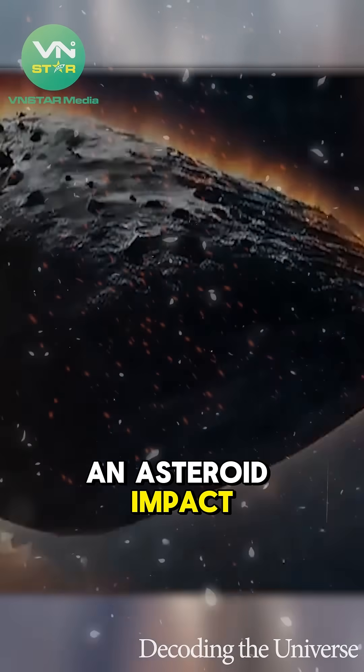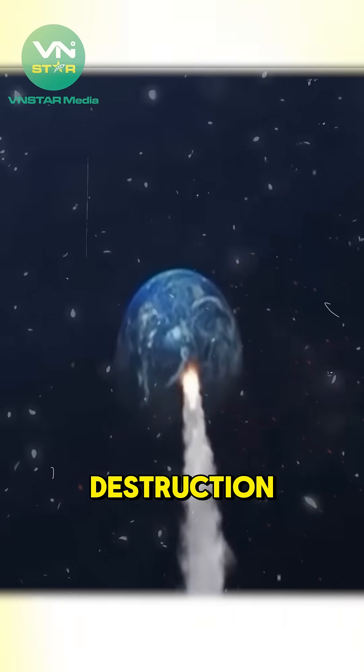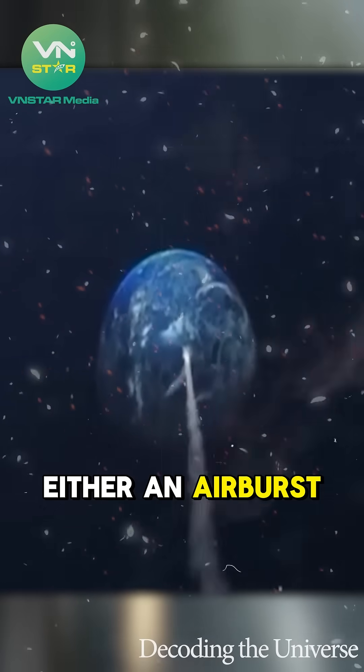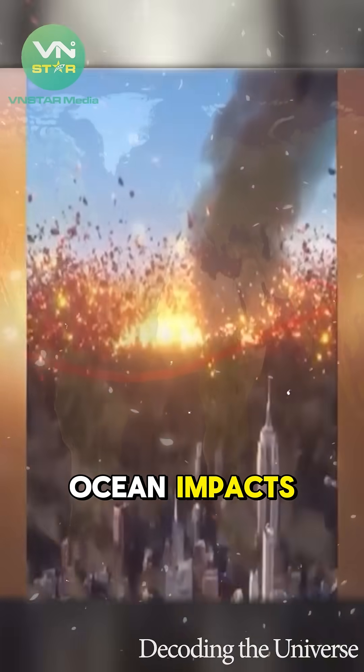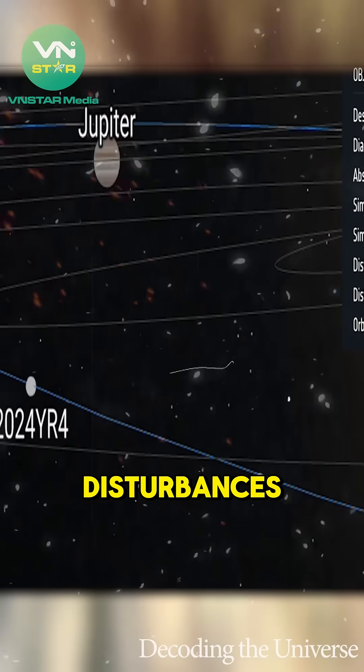An asteroid impact can cause three main types of destruction: localized devastation from either an airburst or a direct ground impact, tsunamis caused by ocean impacts, and global climate effects from large-scale disturbances.